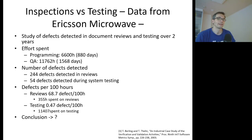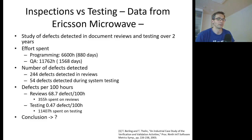We can find that 355 hours were spent on reviews. This means that the defect detection rate per 100 hours of software reviews is 68.7 defects. Numbers for testing show that 1104 hours were spent on testing, resulting in a defect detection rate of 0.47 defects per 100 hours.